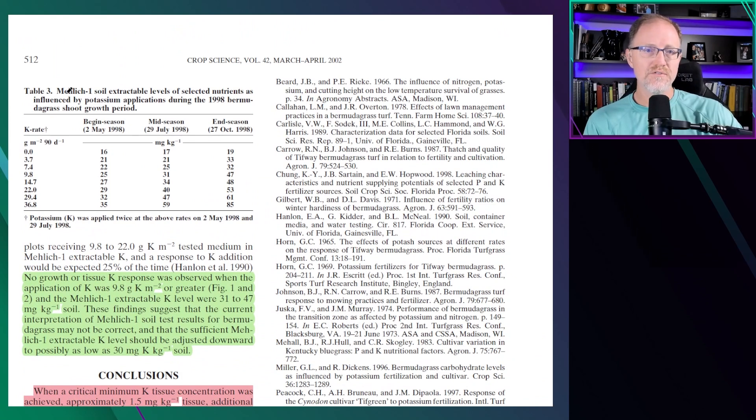Now this table here, table three, shows Mehlich soil extractable levels of selected nutrients by season. You'll notice at the beginning of the season in May, he has all the potassium rates going from zero to seven and a half pounds per year, and he has the soil potassium in May, in July, and in October in 1998. You'll notice in May is when all the potassium levels are at their lowest, and in the fall in October is when all the potassium levels are at their greatest. So that's when you would want to consider taking a soil sample if you choose to go that route—in the spring when all the potassium concentrations are at their lowest if you're dealing with similar soils in North Florida.